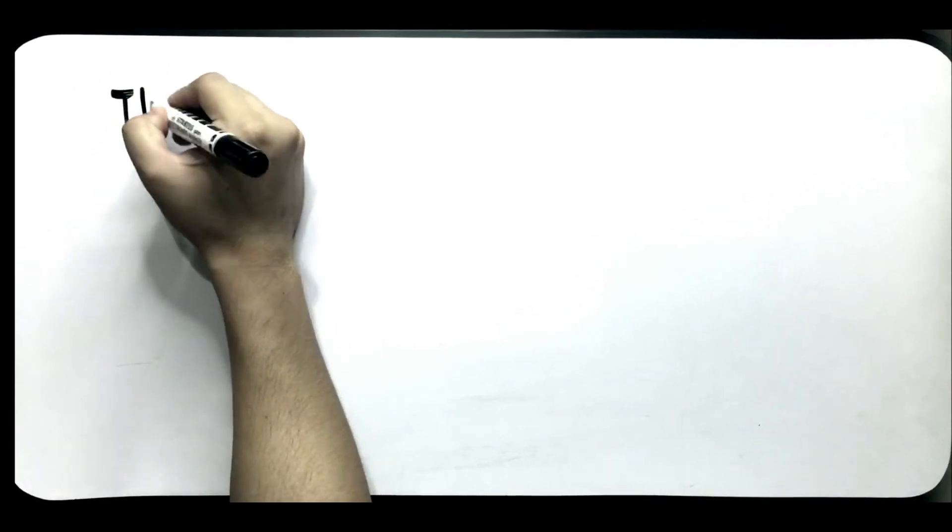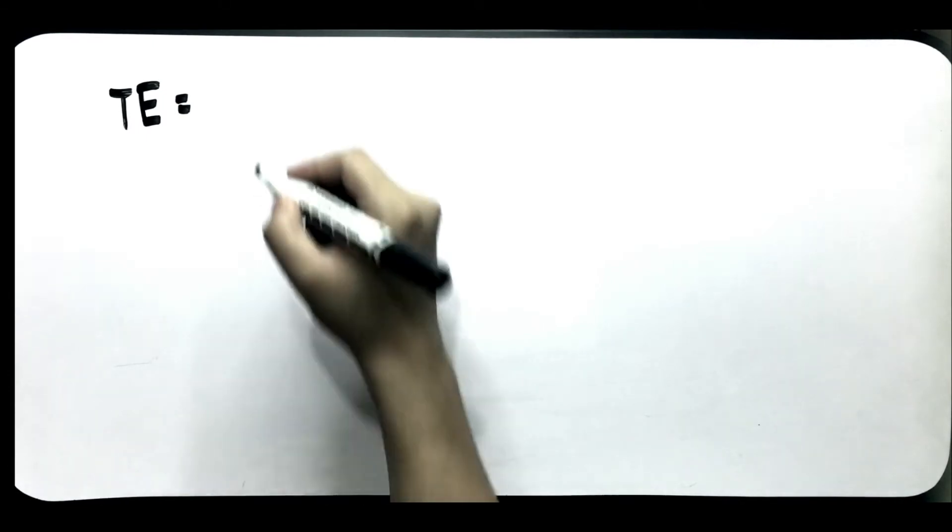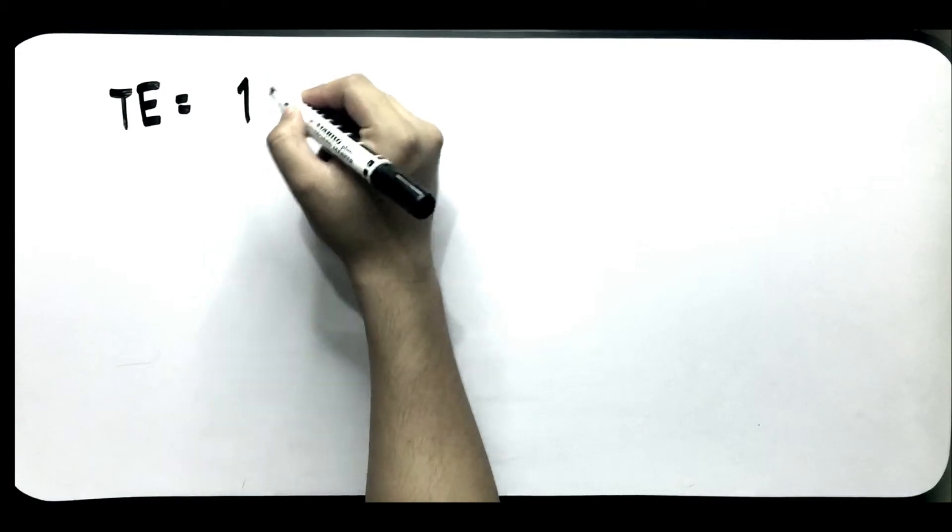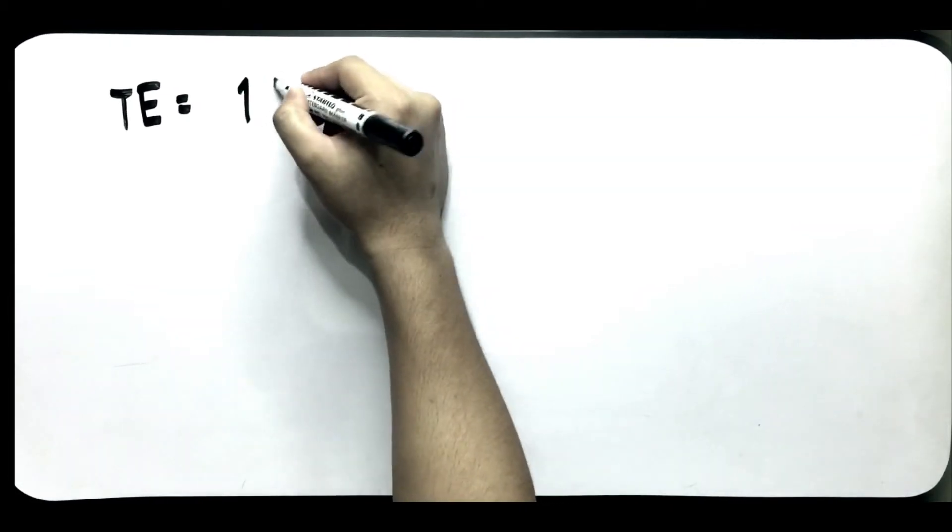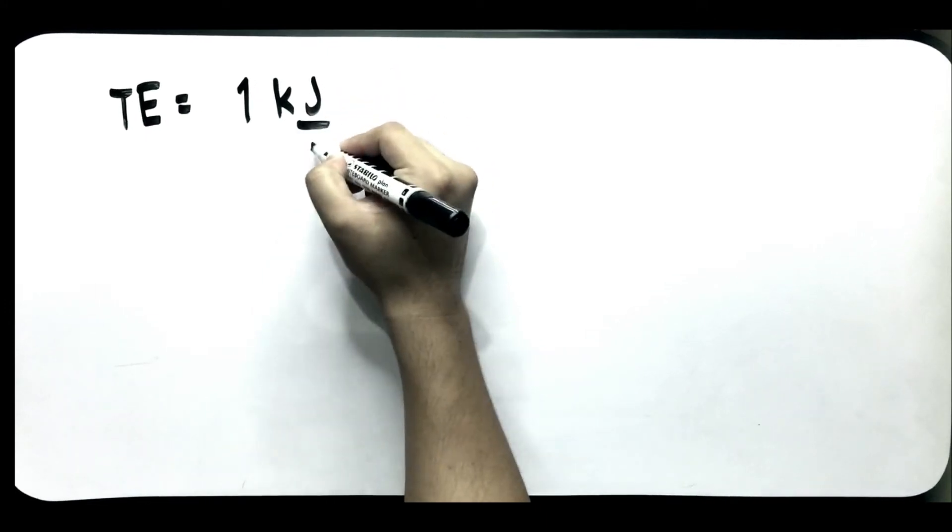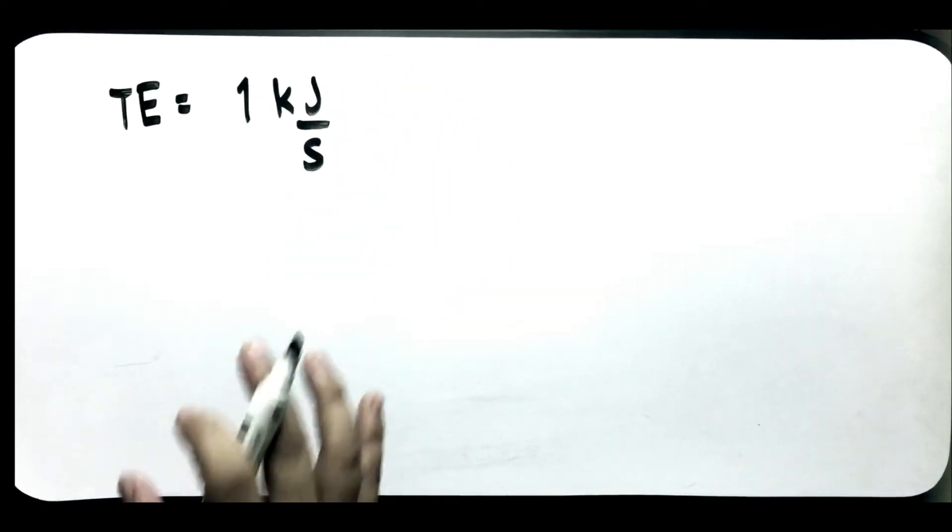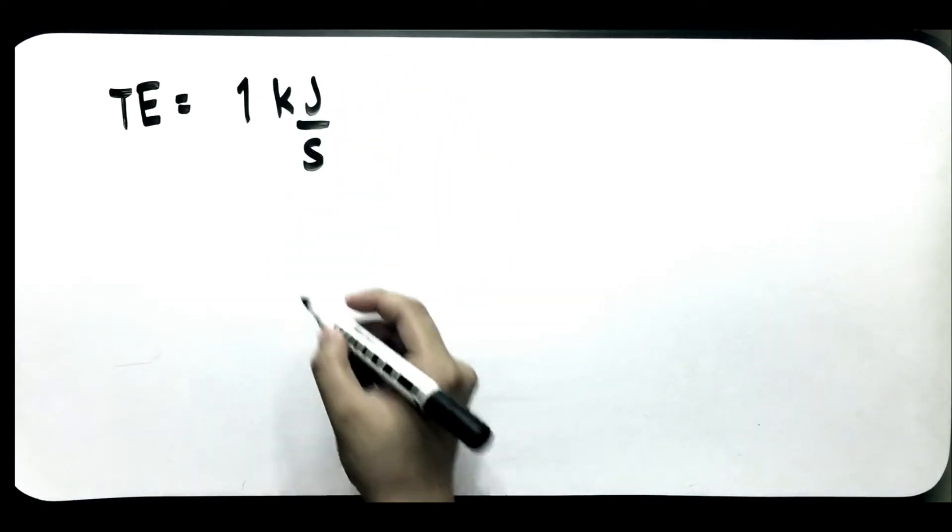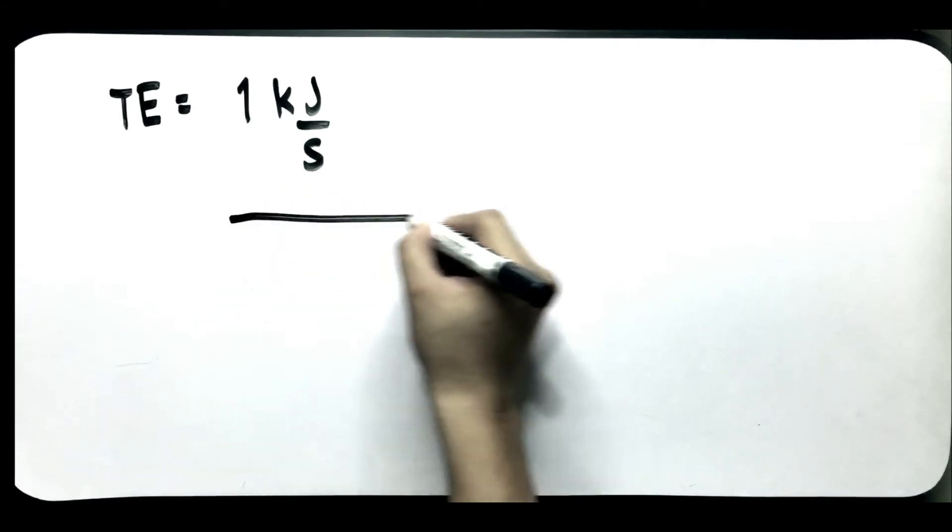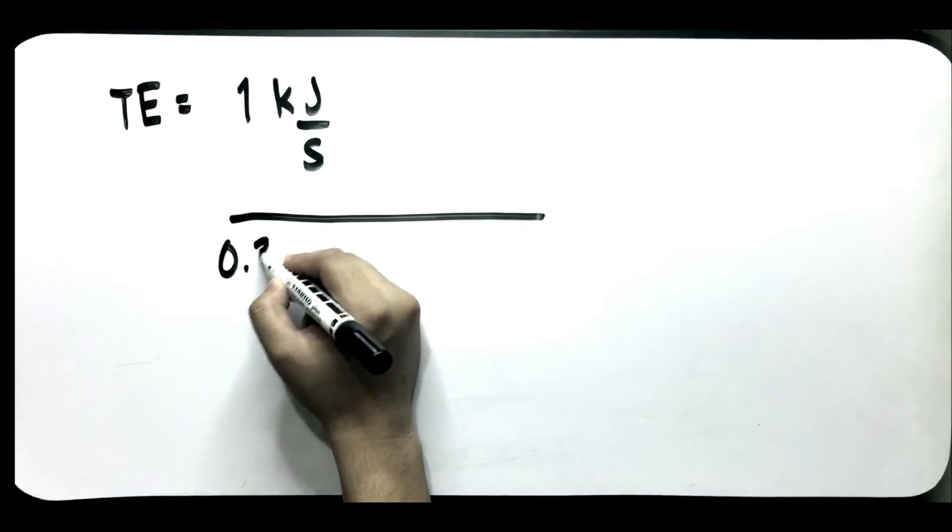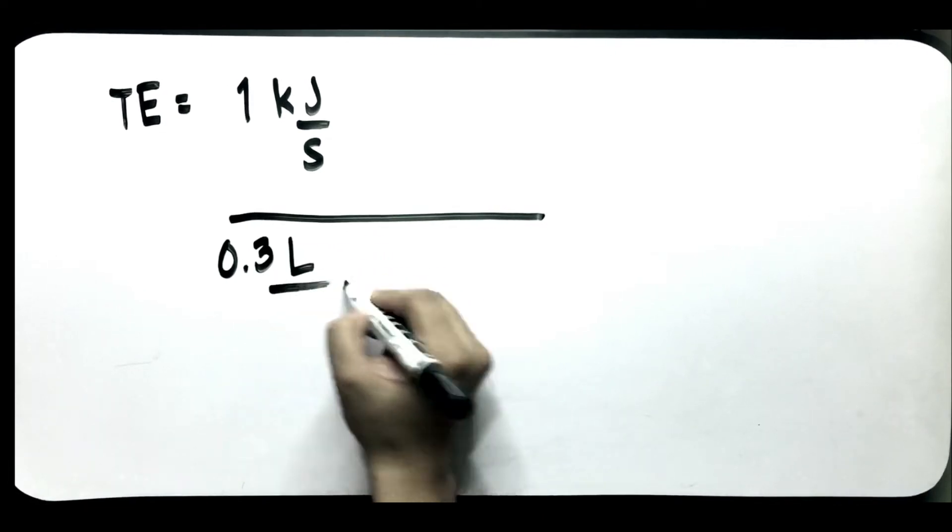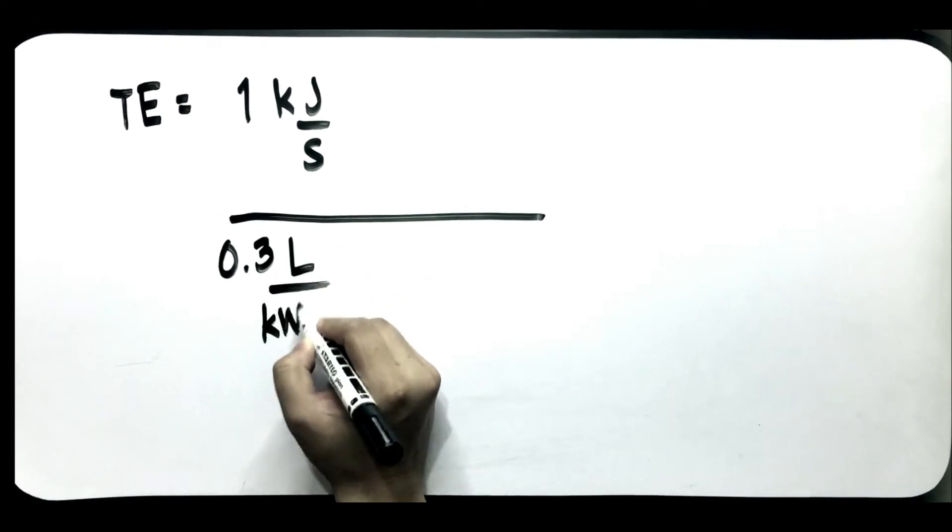So, ang kailangan natin, since ang ginamit na unit ng power is kilowatt, so ang ilalagay natin is 1 kilowatt. Ang kilowatt ay equal din sa 1 kilojoule per second. I-divide na naman natin siya dun sa specific fuel consumption na 0.30 liters per kilowatt hour.